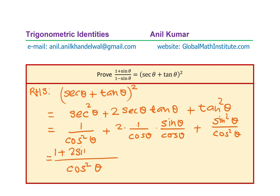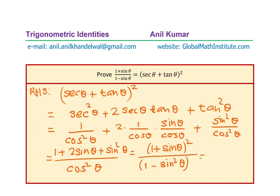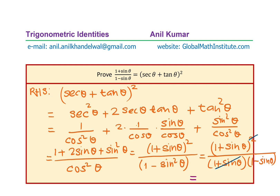In the numerator what we get is 1 plus 2 sine theta plus sine squared theta, which is definitely 1 plus sine theta whole square. The denominator cos squared theta can be written as 1 minus sine squared theta, which factors as 1 plus sine theta times 1 minus sine theta. Now we can cancel 1 plus sine theta, and what we get is the left hand side, which is 1 plus sine theta over 1 minus sine theta.